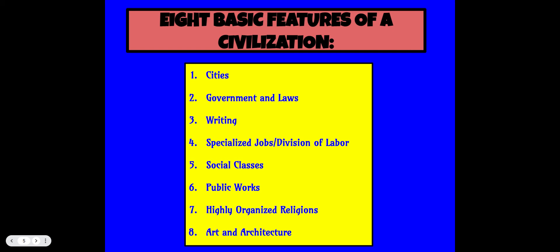Public works is a broad category covering infrastructure projects financed and constructed by the government, for recreational, employment, or health and safety reasons. Highly organized religion is also a feature — we see churches, synagogues, and other places of worship everywhere today. In ancient civilizations, everyone tended to have one unified religion per civilization. Finally, art and architecture are important for expression and understanding a time period — we can see the difference between a modern structure and a building that's been there for hundreds of years.